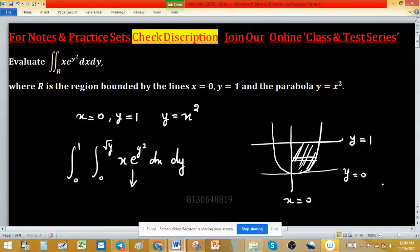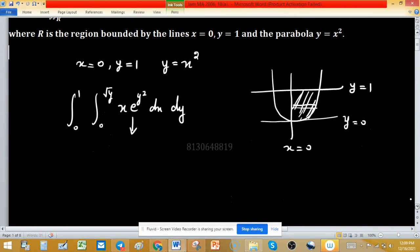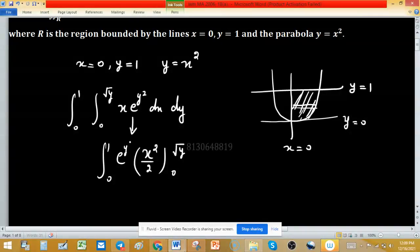Now, e raised to the power y squared can be considered as a constant, so x squared upon 2 with limits 0 to root y, and we need to integrate over 0 to 1 e raised to the power y squared dy. This is the same as the integral from 0 to 1 of e to the y squared times y upon 2 dy.